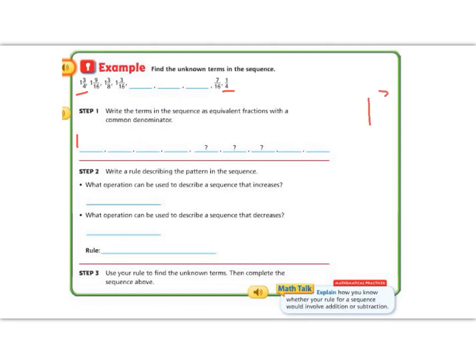So 3 times 4 is 12. So that's going to give me 1 12/16. My next one's already in 16ths, so that one is 1 9/16.